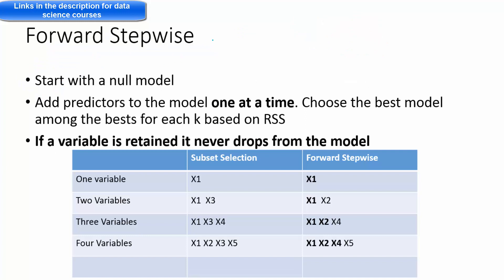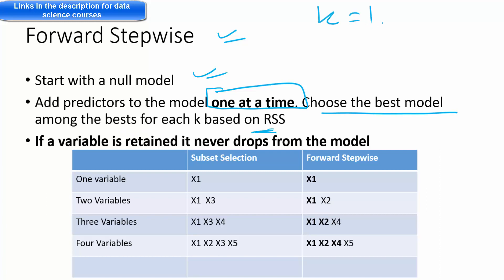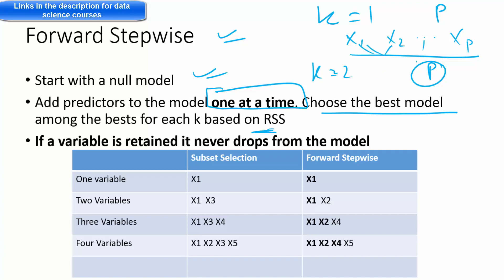The forward stepwise approach works like this: we start with a null model and then keep adding predictors or features to the model one at a time. We choose the best model among the best of k based on RSS. When k equals 1, you have p number of models — one for each predictor x1 through xp. When k equals 2, you take two variables at a time, like x1 x2, then x1 x3, and so on, ending with one best model.